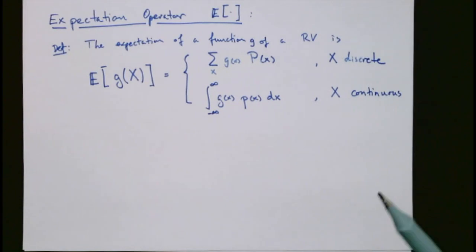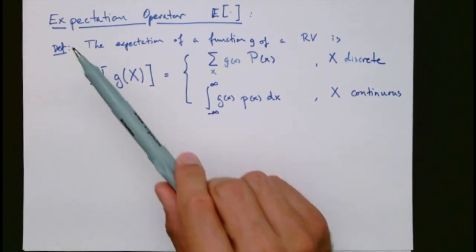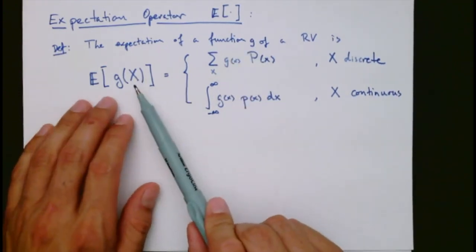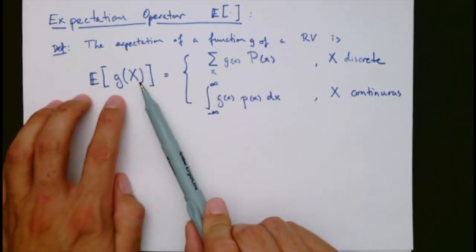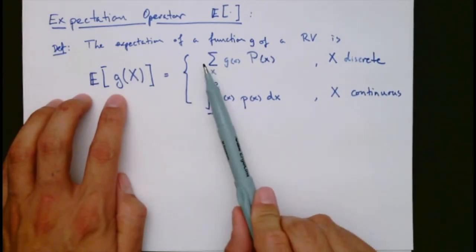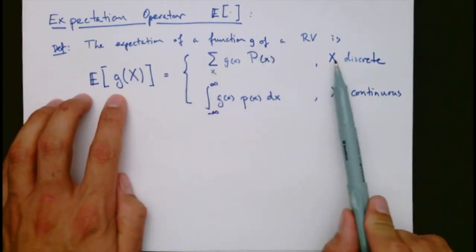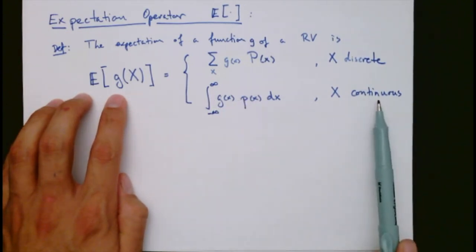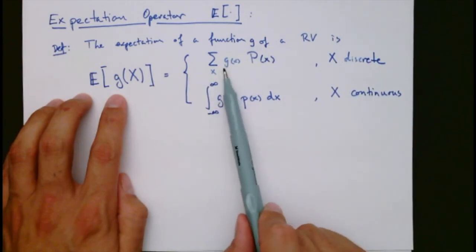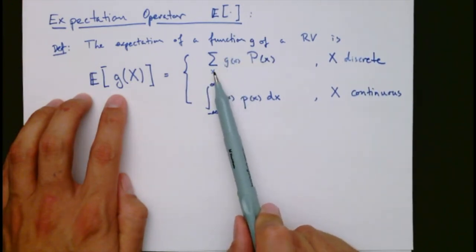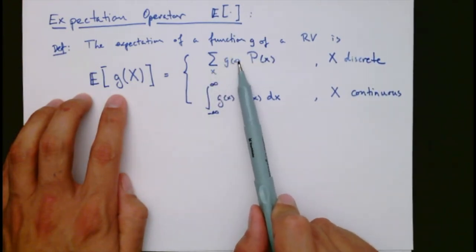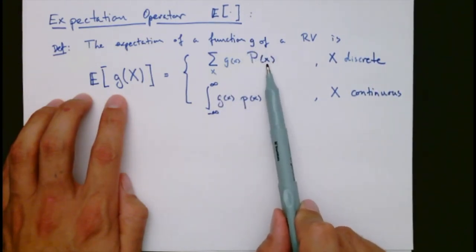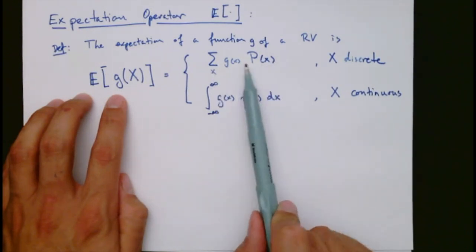For both discrete and continuous random variables, we can define the expectation operator E. The expectation of a function g of a random variable x is defined as a sum if x is discrete, or as an integral if x is continuous. In the discrete case, we evaluate the function g on every possible value x could take and weight it by the probability that x is actually that value. So that is a weighted average.